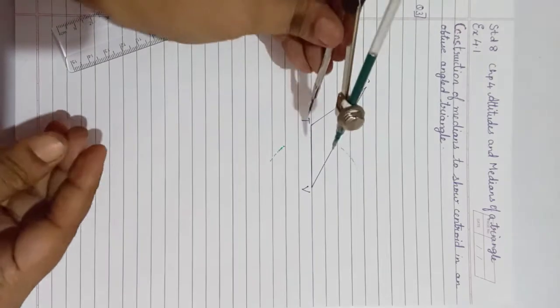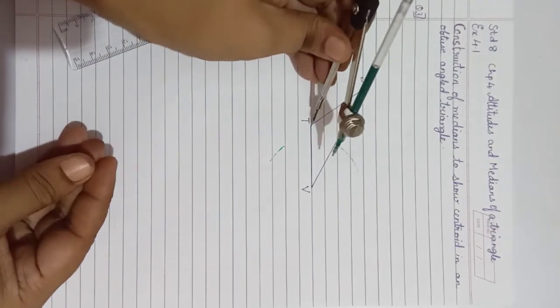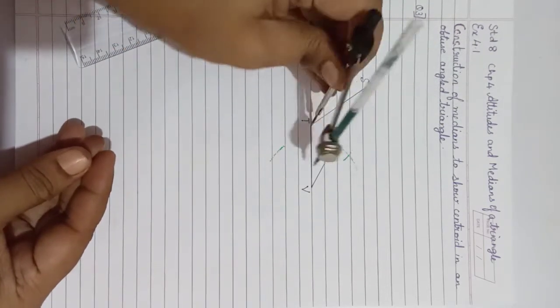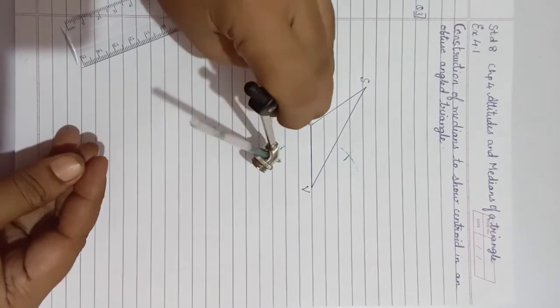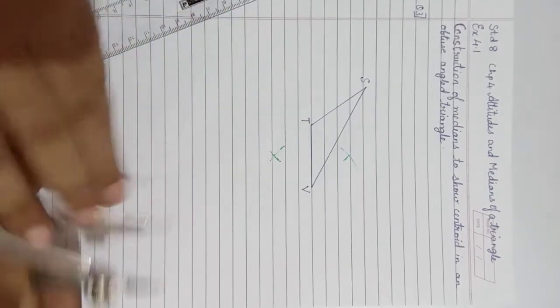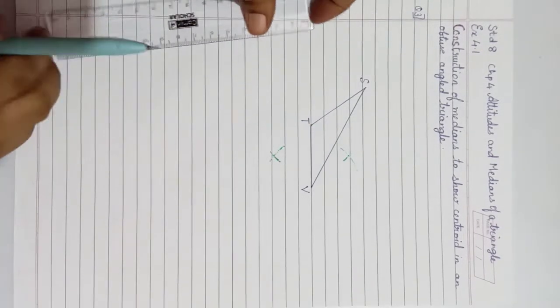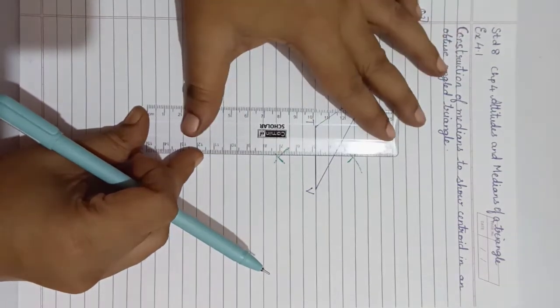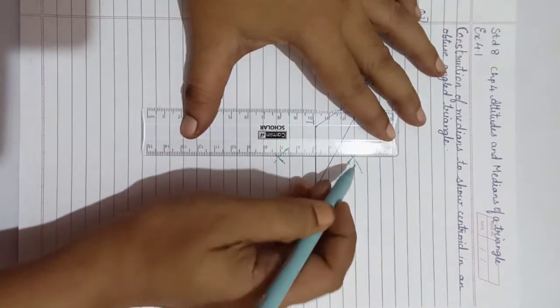From point T, intersect the arc up and down. Join the two arcs with dotted lines.